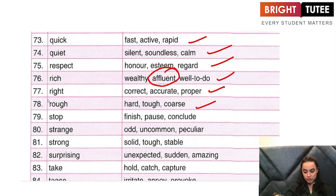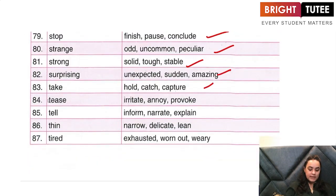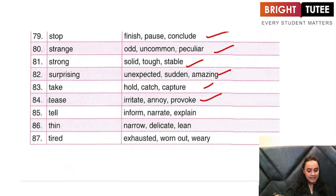'Stop' — is to finish, pause, conclude. 'Strange' — is odd, uncommon, peculiar. 'Strong' — is solid, tough, stable. 'Surprising' — is unexpected, sudden, amazing. 'Take' — is to hold something, to catch something, to capture something. 'Tease' — is to irritate someone, to annoy someone, to provoke someone. 'Tell' — is to inform, narrate, explain. 'Thin' — is narrow, delicate, lean. 'Tired' — is exhausted, worn out.